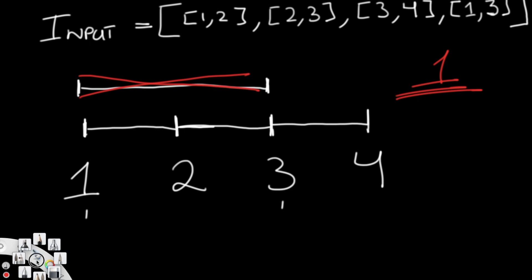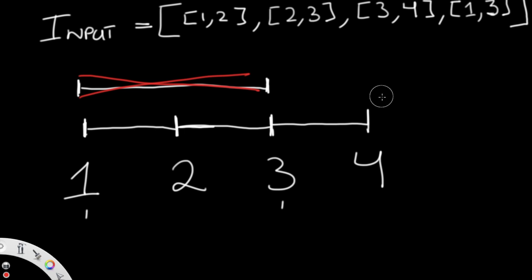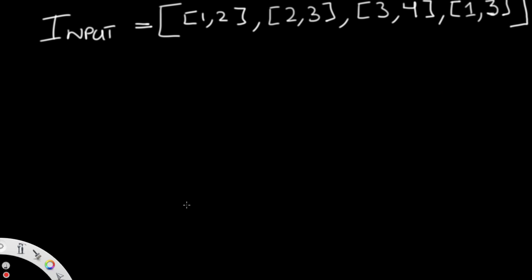There are two ways to look at this problem. One is as the question describes — minimize the number of intervals removed. But another way is: how many intervals can I keep without overlapping? We want to maximize the number of non-overlapping intervals. The way to do that is by looking for whatever has the earliest end time, because picking the earliest end time gives you more room to incorporate other intervals.